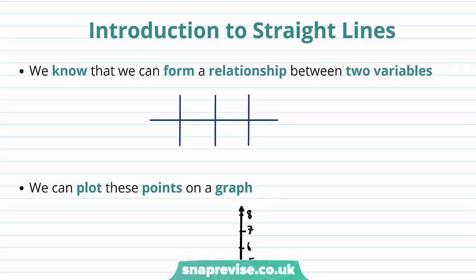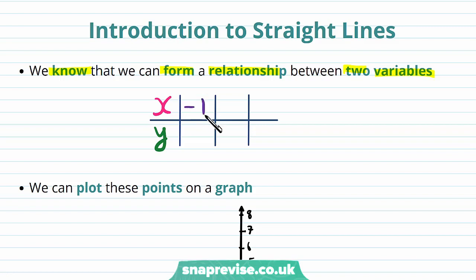So what is the form of an equation of a straight line? We know that we can form a relationship between two variables. In particular, we can have values of x and y, and then given certain x values — say x equals minus 1, x equals 1, and x equals 2 — we can have associated y values: y equals 1, y equals 5, and y equals 7.